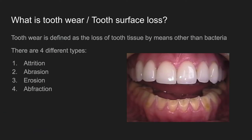What is tooth wear, tooth surface loss? Tooth wear is defined as the loss of tooth tissue by means other than bacteria. There are four different types: attrition, abrasion, erosion, and abfraction. Throughout this video I'm going to be discussing their definitions, their potential cause and presentation, and also tips on how to remember each one.